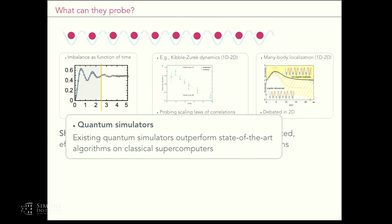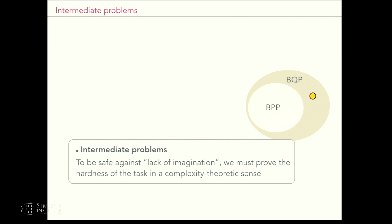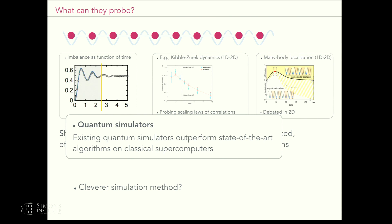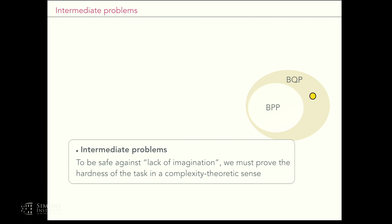This is an interesting baby step in the right direction. Of course one can argue there could always be a better algorithm — who are we to say we outperform state-of-the-art algorithms when there could be a better way? So to be safe against this devil's advocate argument, to be safe against a lack of imagination, one would like to see some sort of hardness of a task in a complexity-theoretic sense. One would like to have a look at some sort of intermediate problem — say outside BPP but not BPP-complete — some problem realizable in the lab under natural settings that shows some sort of speedup.